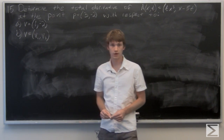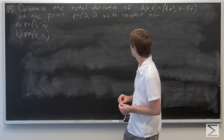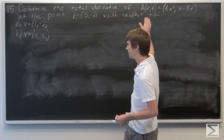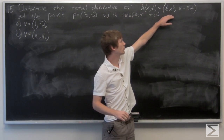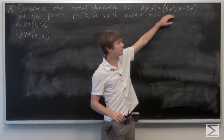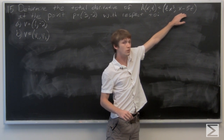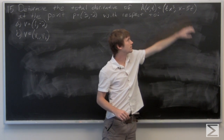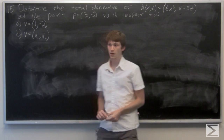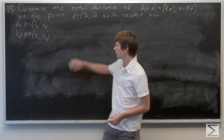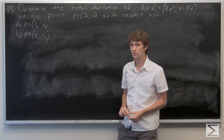In this problem, we are asked to find the total derivative of a function a of x, t, defined component-wise as tx cubed as the first component and x minus 5t as the second component. We want it at the point p equals (3, negative 2).